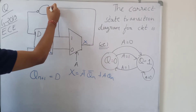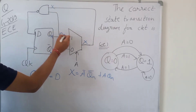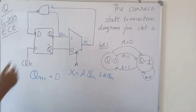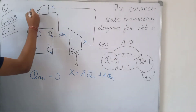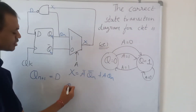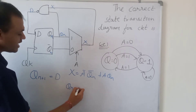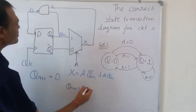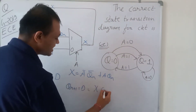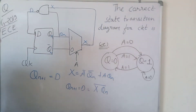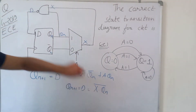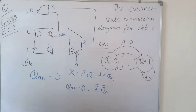The output of this NAND gate takes inputs X and Qn. So D = (X·Qn)̄ because it is a NAND gate. And since Qn+1 = D, we have Qn+1 = (X·Qn)̄.